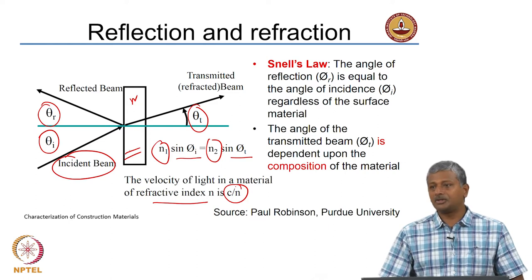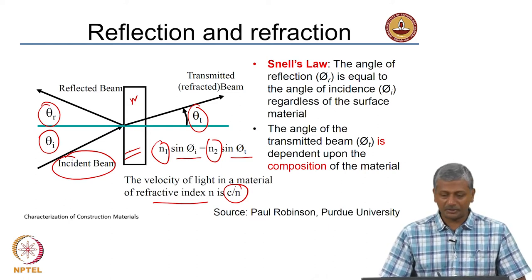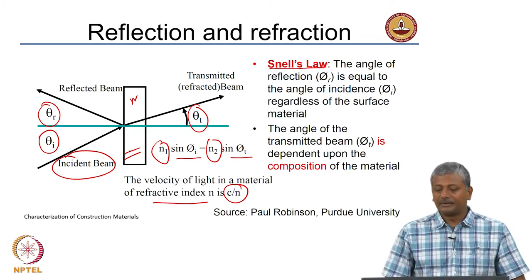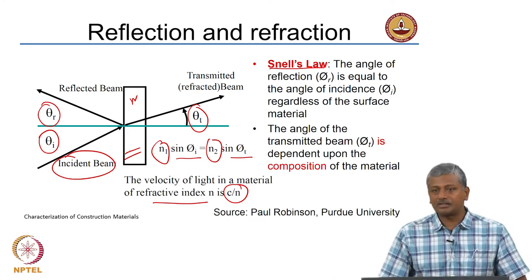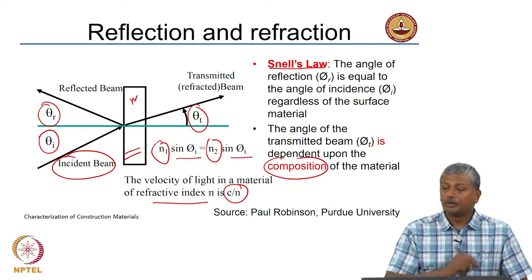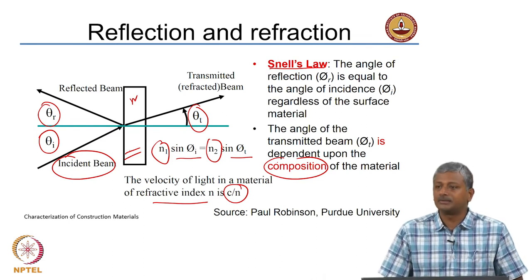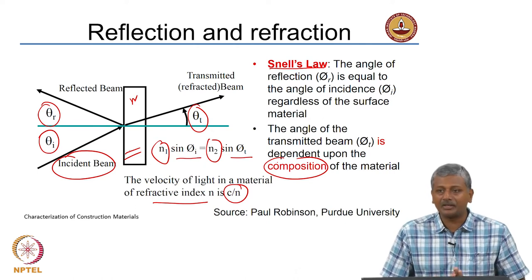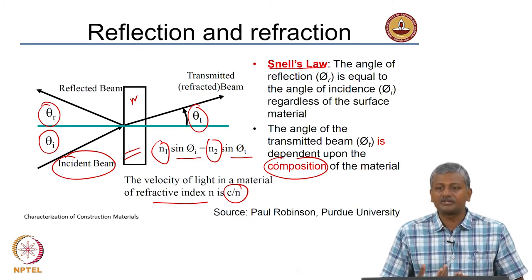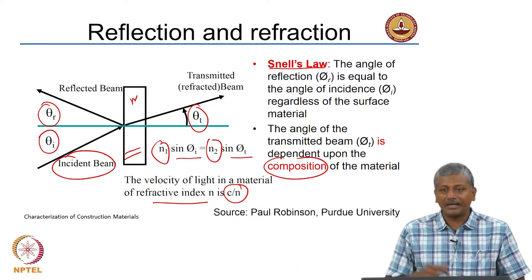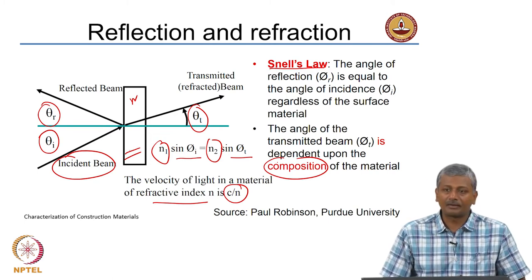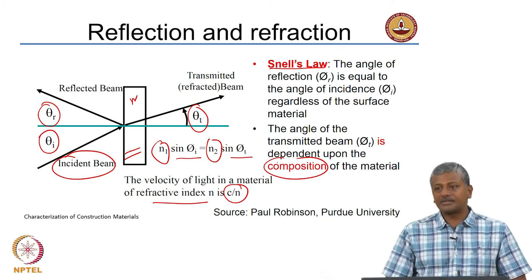This law relating reflection angle to incidence angle is called Snell's law. The refractive index is defined by the degree to which light is bent on traveling to another medium, which is dependent on the composition of the material. This already provides a basis for characterization using light: if different phases in a material have different refractive indices, the light traveling through these phases will be bent to different degrees. Also, based on composition, the amount of reflected light energy will be different for different types of phases — and that is how we use light microscopy to distinguish the different types of phases present in our sample.